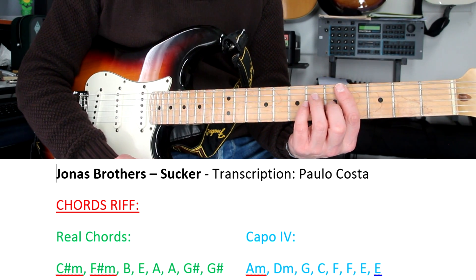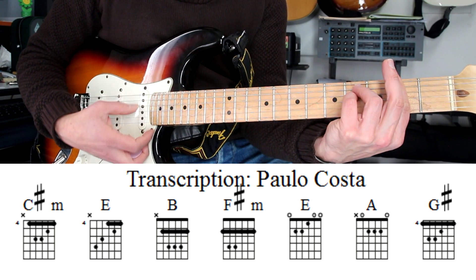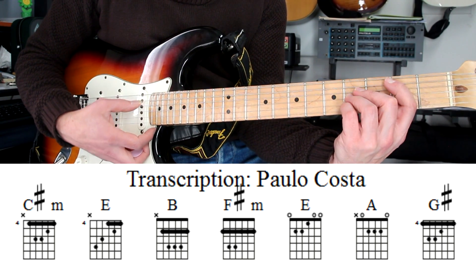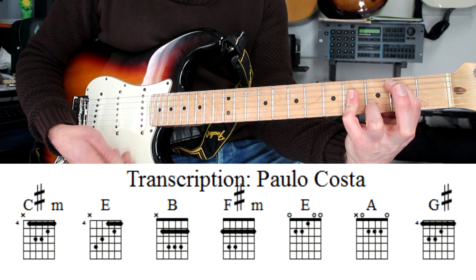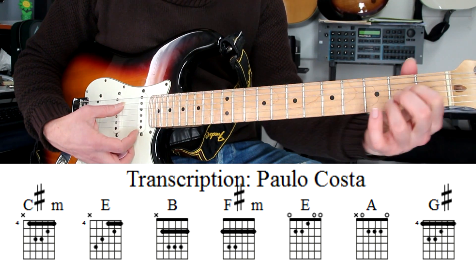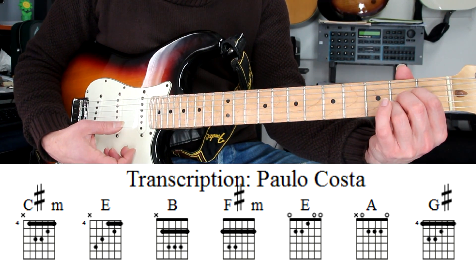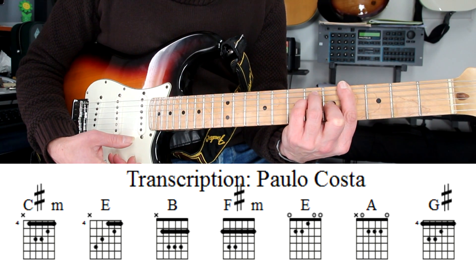So these chords are C sharp minor chord, F sharp minor chord, B major chord, but you can play with these fingers or with these fingers, mute first string, E major chord, A major chord, these fingers or with these ones, and C sharp, G sharp major chord.